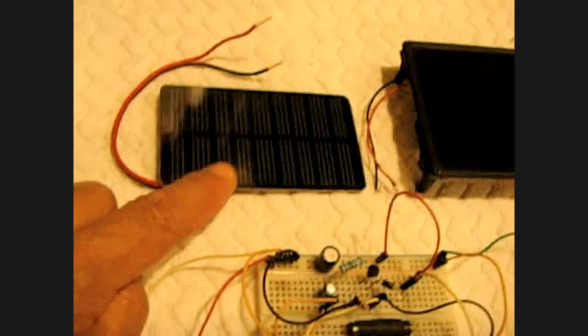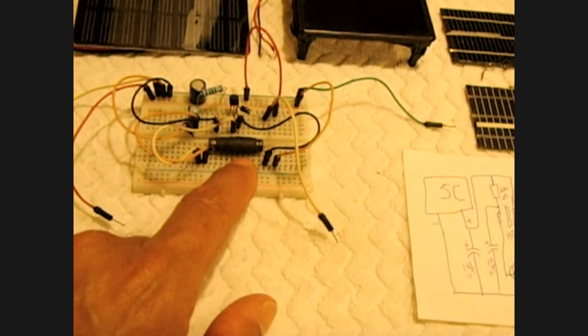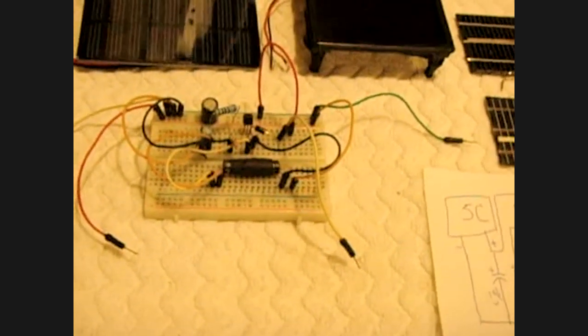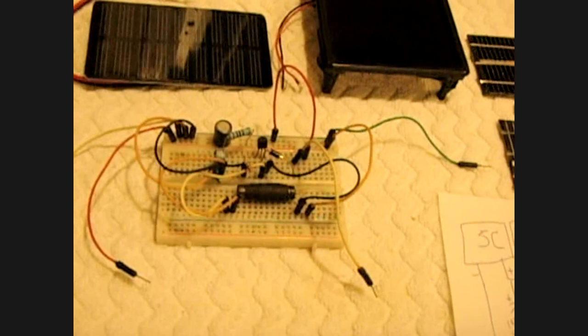When you connect this solar cell right here, which is only four and a half to five volts, the output with the way I wound this transformer will put out roughly 40 to 42 volts in full sun.